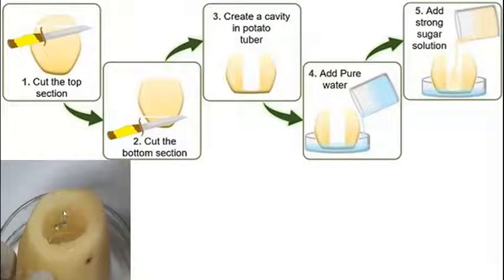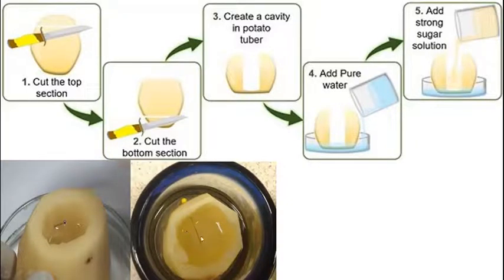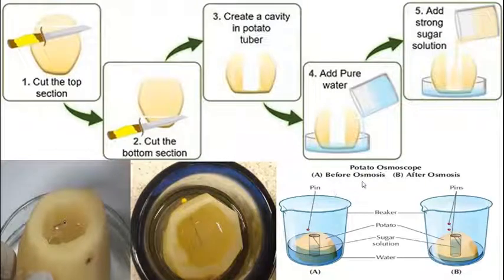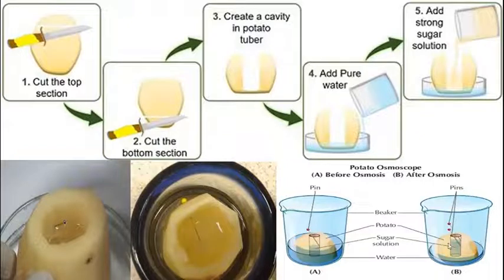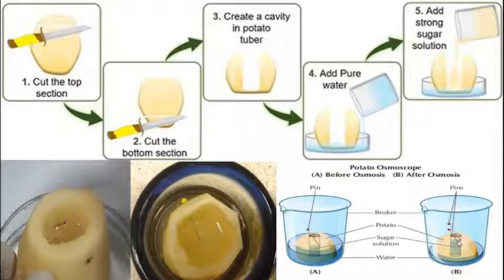Potato cavity इस तरीके से तैयार की जाती है, beaker के अंदर रखी हुई है, और इसके अंदर जो liquid दिखाई दे रहा है वो sugar solution है। एक pin लगा रखी है यह देखने के लिए कि पानी का level शुरुआत में कैसा था और बाद में कितना बढ़ा। Before osmosis और after osmosis में हम देख सकते हैं कि osmosis से पहले potato cavity में sugar solution का level कम है, लेकिन बाद में level बढ़ा हुआ मिलता है। Pins के बीच की distance से हम level का rise measure कर सकते हैं।